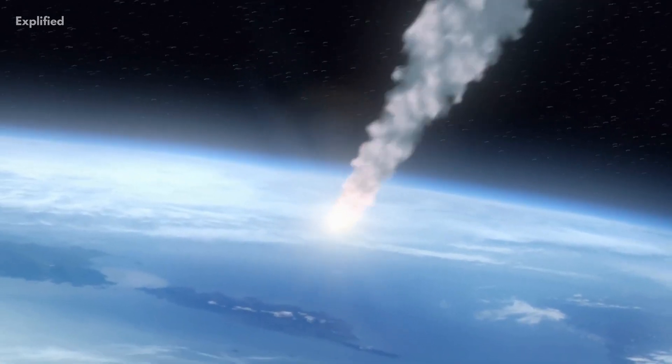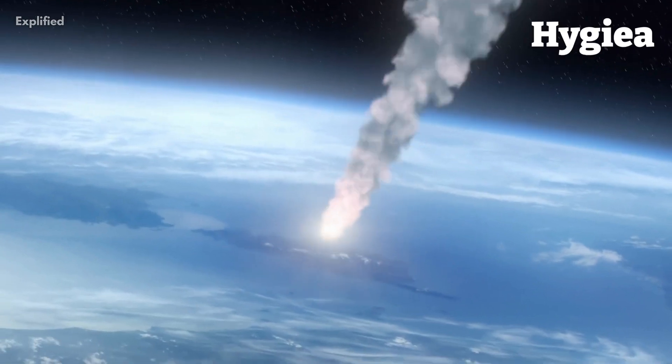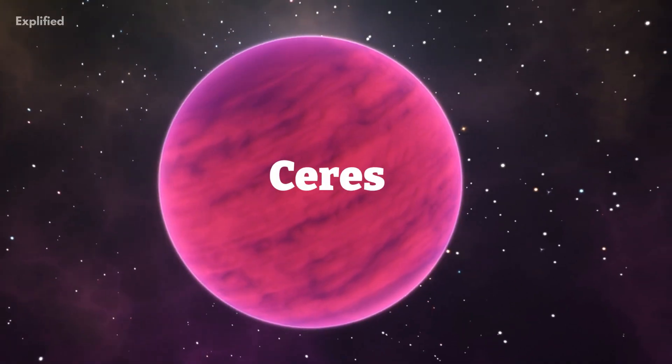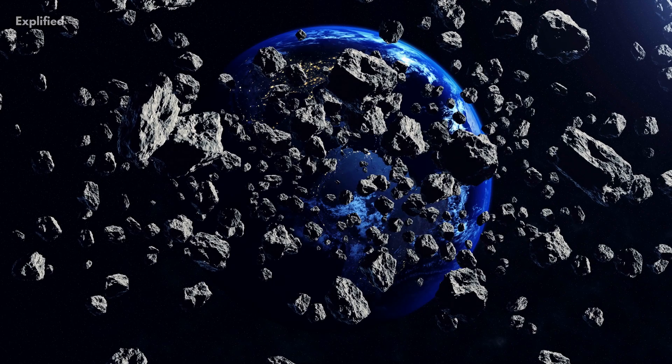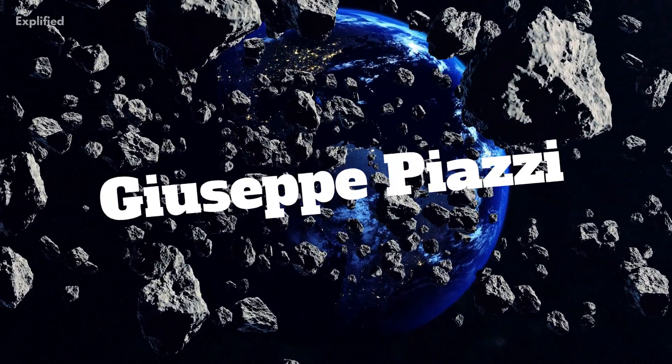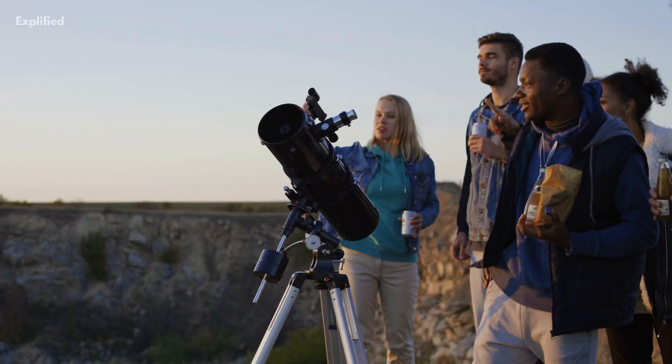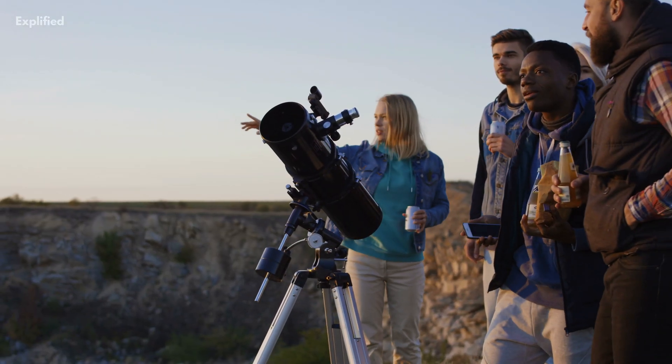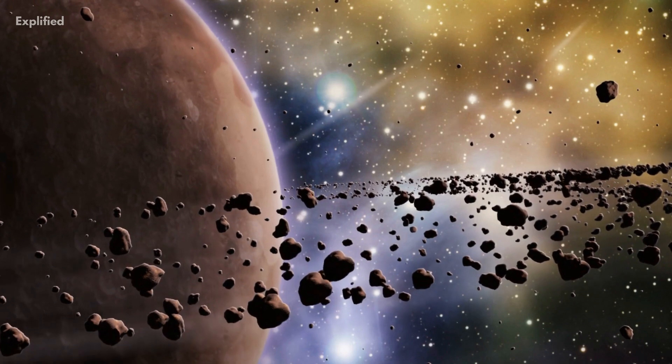These include three asteroids called Pallas, Hygieia, and Vesta, and a dwarf planet known as Ceres. The asteroid belt was first discovered in 1801 by Italian astronomer Giuseppe Piazzi. He found Ceres and then astronomers began to find other objects located in the asteroid belt.